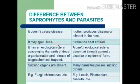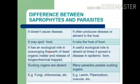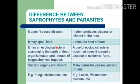Saprophytes may spoil food. For example, bread molds — if you leave bread for 2 to 3 days, then fungus grows on it. These are saprophytes, and how do they take their food? They pour digestive juice on it and slowly, slowly they spoil all the food. In parasites, it robs the host of food.